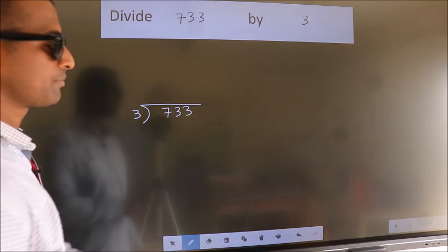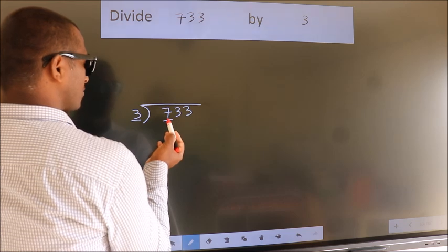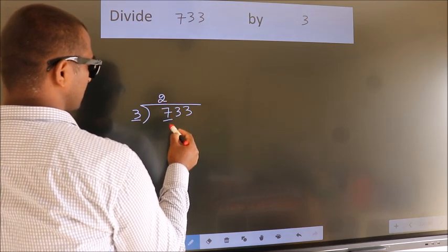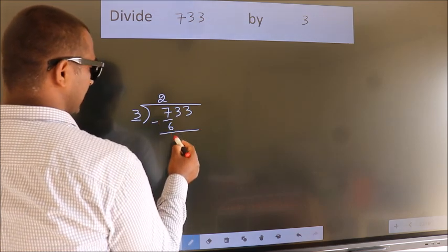Next. Here we have 7, here 3. A number close to 7 in the 3 table is 3 times 6. Now we should subtract. We get 1.